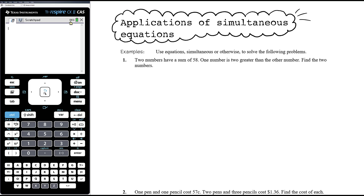Let's look at these questions. The first example: two numbers have a sum of 58; one number is two greater than the other number; find the two numbers. Using the same process as before, I want you to clearly define your variables — what are they representing? Be precise: X equals the number of apples, the cost, the weight — what numerical quantity is it equal to? So we want to define our variables, then set up a pair of simultaneous equations or one single equation.